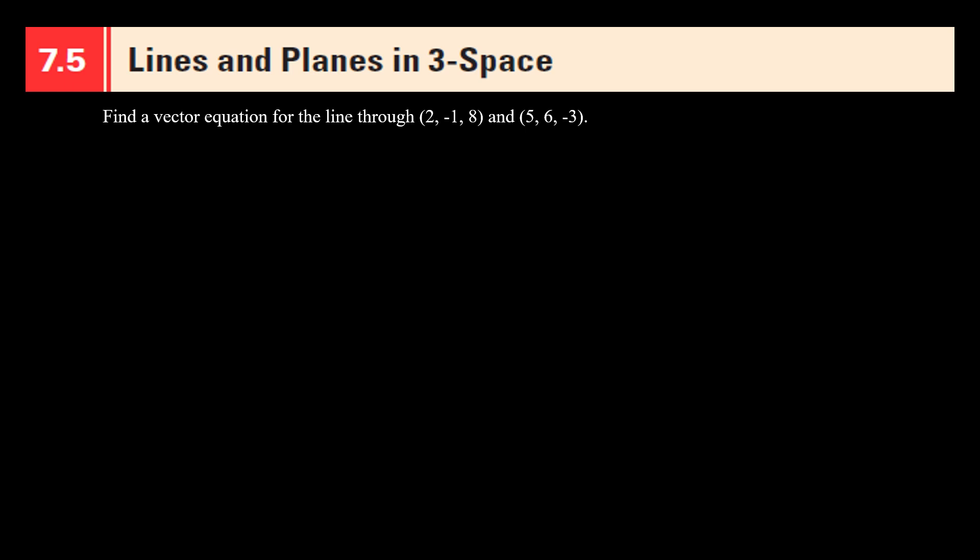Hello everyone. Today we are starting section 7.5, which is lines and planes in three space. So let's do a problem here. Find a vector equation for the line passing through the point (2, -1, 8) and (5, 6, -3).